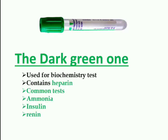The dark green tube is used for biochemistry tests and contains heparin — specifically sodium heparin. Common tests performed from this tube are ammonia, insulin, and renin.